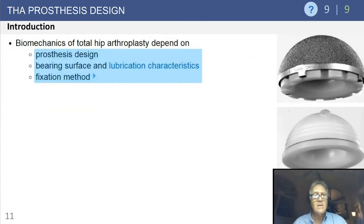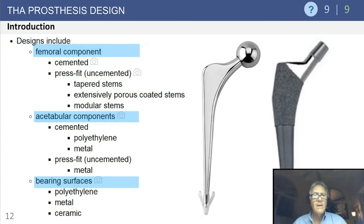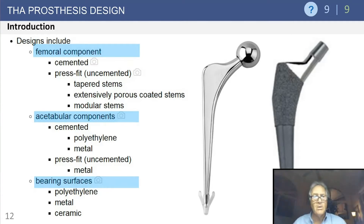Regarding prosthesis design, we're going to talk about the success of total hip arthroplasty — the biomechanics depend on the design, the bearing surfaces, how lubricity of these surfaces is achieved, and different methods of fixation. We will discuss femoral components — both cemented and press-fit — acetabular components — press-fit and cemented — as well as bearing surfaces: poly, metal, and ceramic.